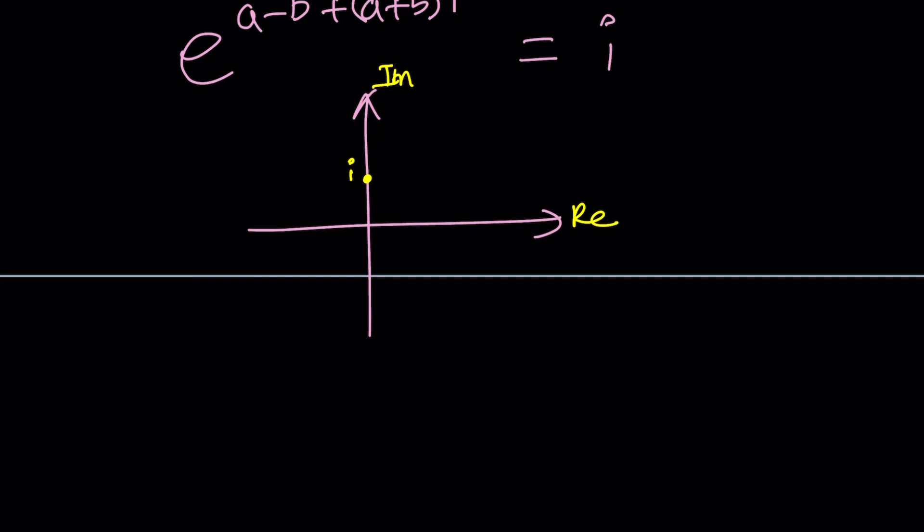And obviously the angle that this vector makes with the real axis with the positive real axis is pi over two radians plus two pi, another two pi so on and so forth. In other words we're allowed to add multiples of two pi to this that's going to be the period.